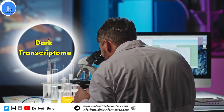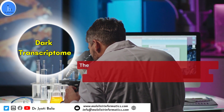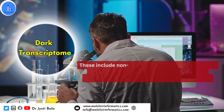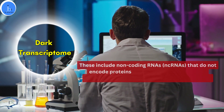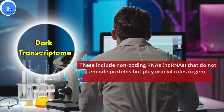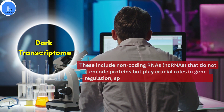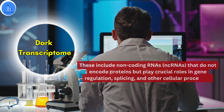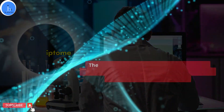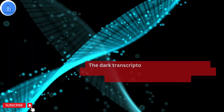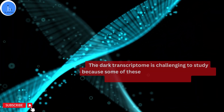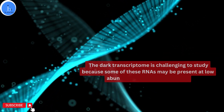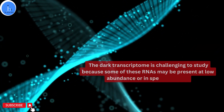The dark transcriptome consists of all the RNA transcripts that are produced from the dark genome. These include non-coding RNAs that do not encode protein but play a crucial role in gene regulation, splicing, and other cellular processes. The dark transcriptome is challenging to study because some of these RNAs may be present at low abundance or in specific tissues, making their detection and functional characterization difficult.